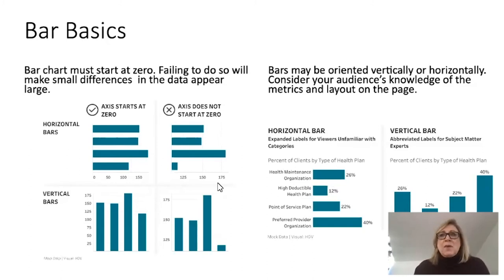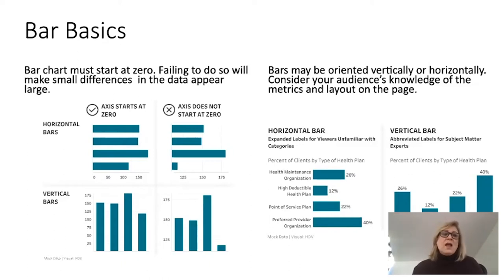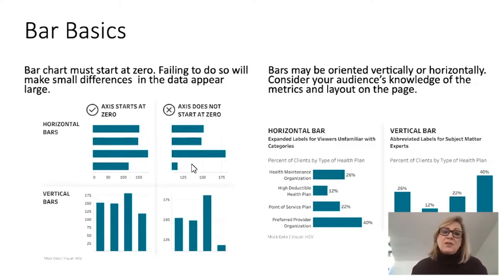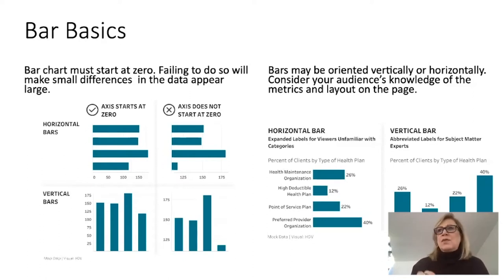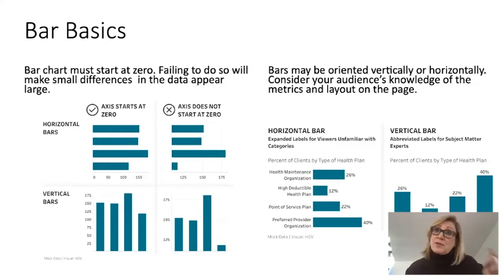In bar basics, no matter what anyone tells you: bars must start at zero — full stop, no exceptions. When you use a bar chart, you are encoding how big something is. If you don't start at zero, you're exaggerating what are actually smaller differences. That is why bar graphs must start at zero. There are some techniques for situations where a zero start point isn't working — such as large value ranges or very close endpoints — but the bottom line is bars must start at zero.